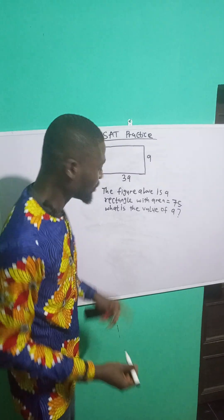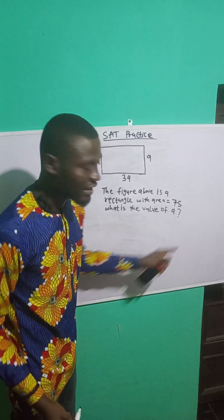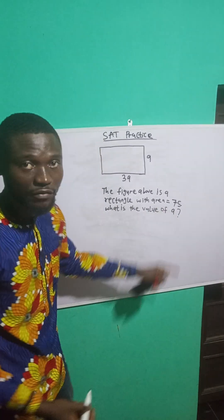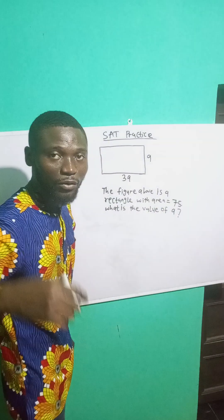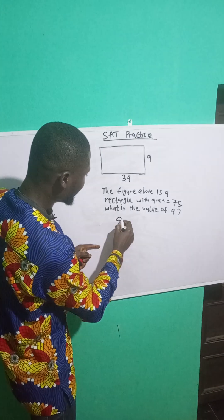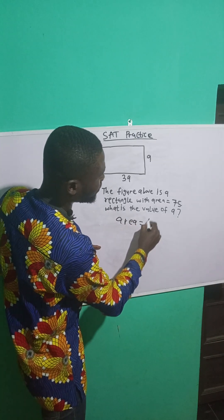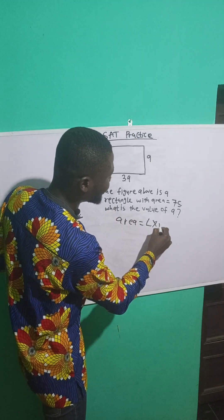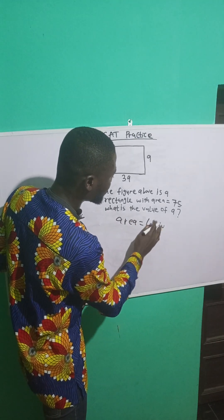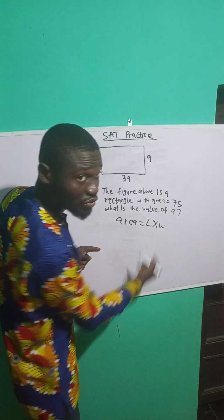The figure above is a rectangle with an area of 75. What is the value of A? The area of a rectangle is length times width.